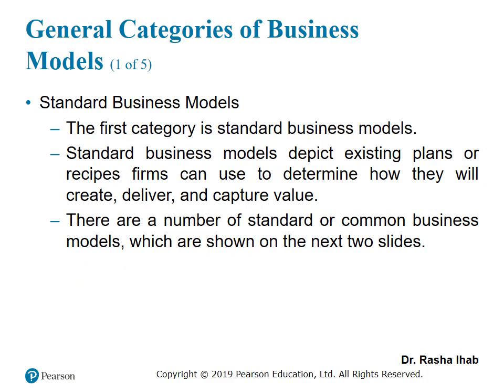We have two general categories of business model. The first one, which we call the standard business model, is like all the business models that are common for normal businesses that we see all over the country. It is the plan that is done to determine how the company is going to create or deliver value for all its stakeholders. Let's see in the next slide some of the categories of the standard business model.